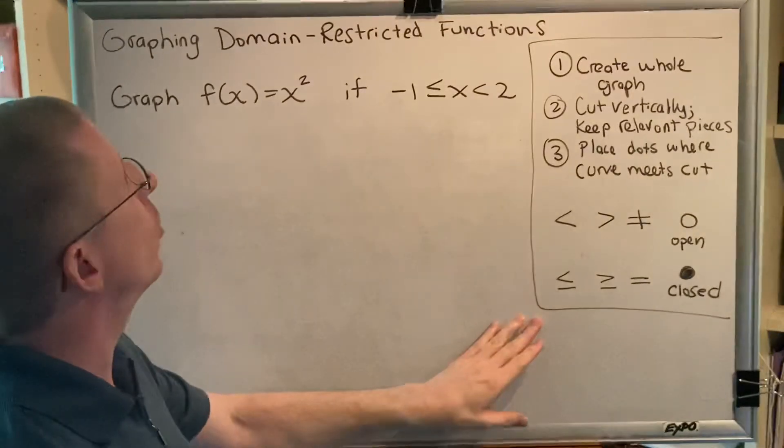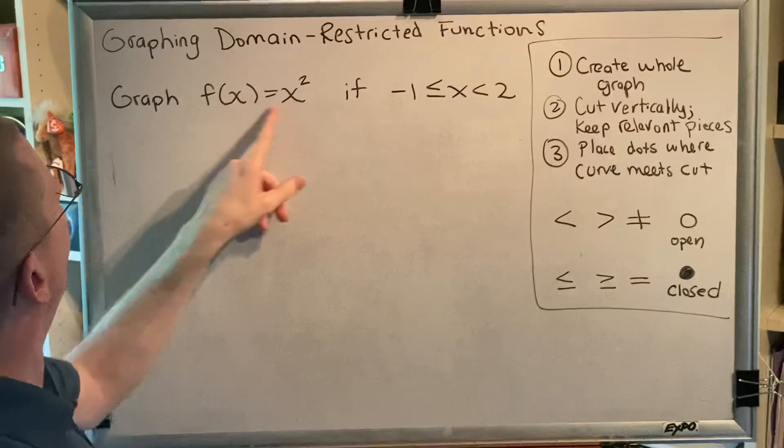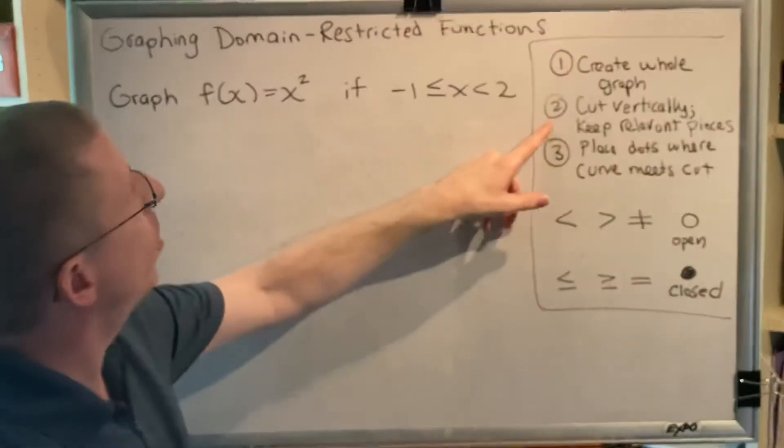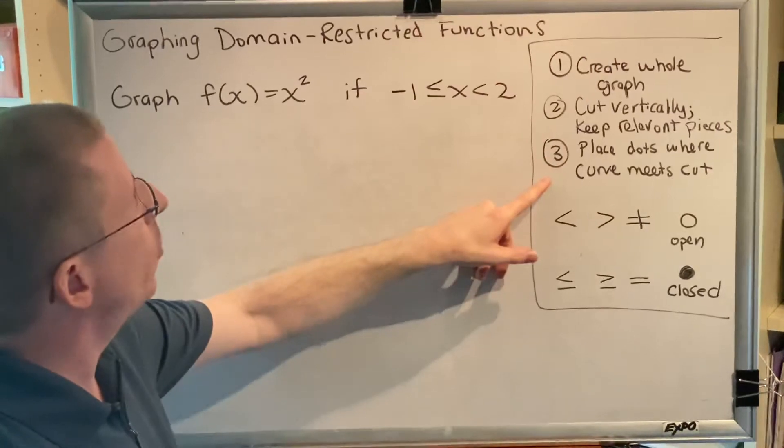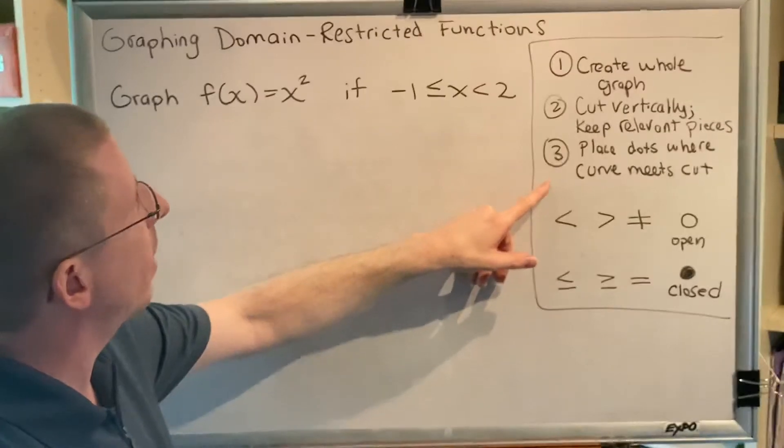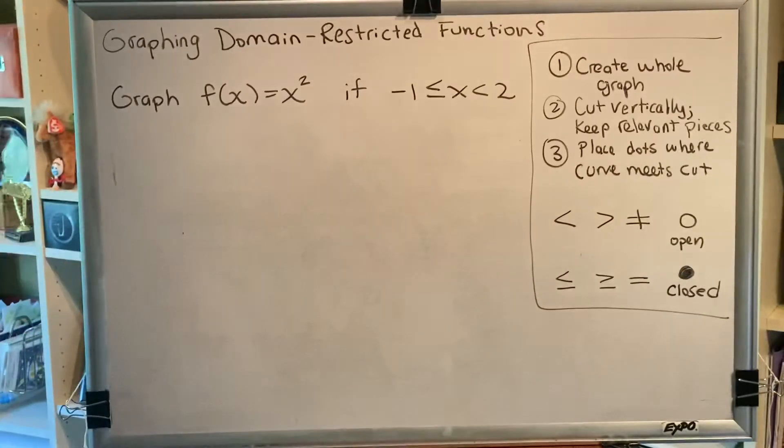Here are the steps for graphing a domain restricted function. Step 1, create the whole graph of the function. Step 2, cut vertically and then keep the relevant pieces. And step 3, place dots where the curve meets the cut. And this reminds us what kind of dot for the different inequality symbols we might encounter.